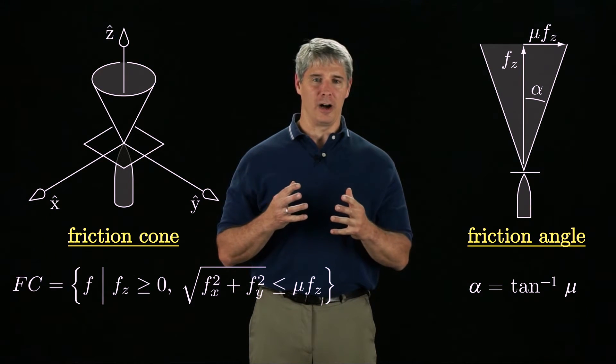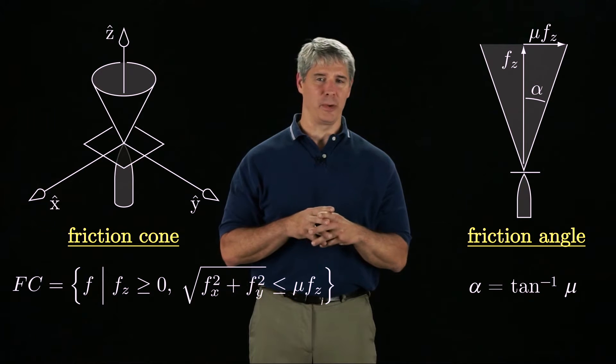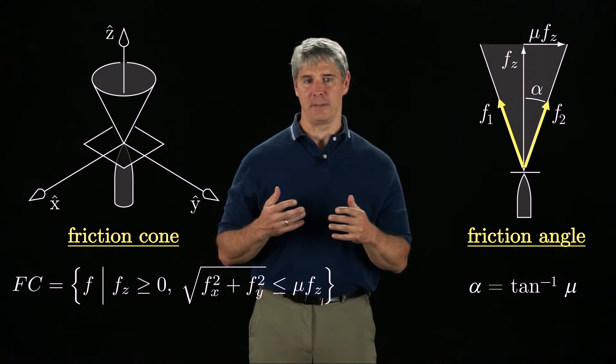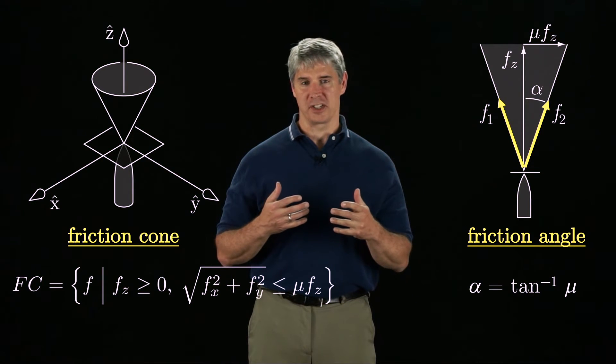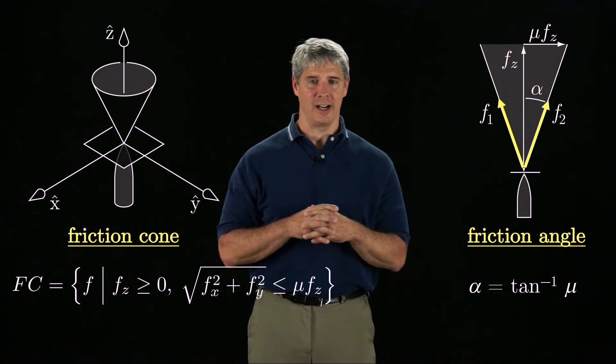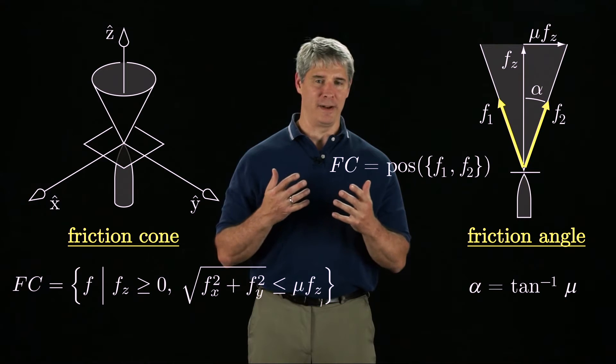This figure also represents the friction cone for a planar contact, and we can define F1 and F2 to be vectors along the friction cone edges. Then the set of all forces that can be transmitted through a planar contact is the positive span of F1 and F2.